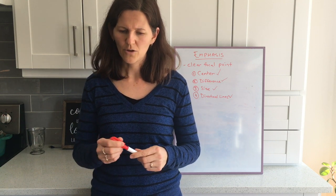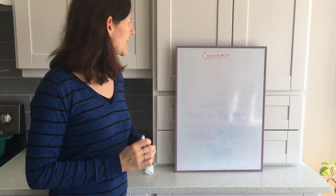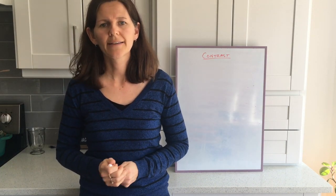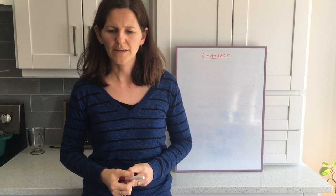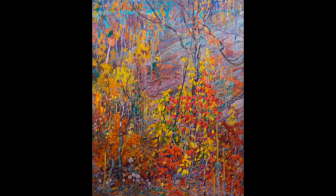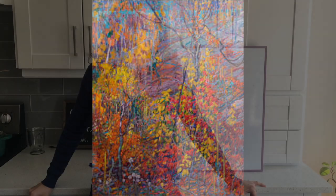Principle of design number four is contrast. Have a look at the image on your screen - this is a Group of Seven painting. When we look at it, it is a little bit confusing and hard to look at. The reason is there's no clear focal point - the artist didn't do any of those things we talked about with emphasis. Everything is just a big, similar mess, all blurring together. This painting has really good unity, but it does not have a clear focal point, good emphasis, or good contrast.